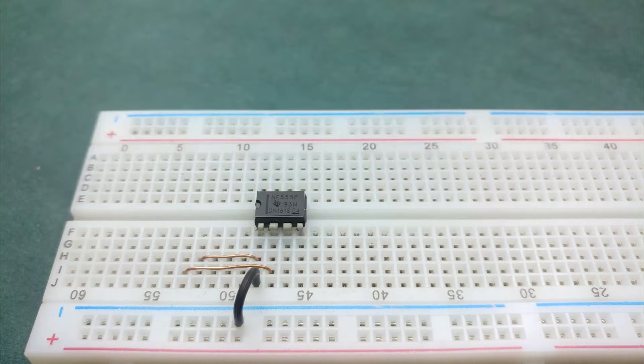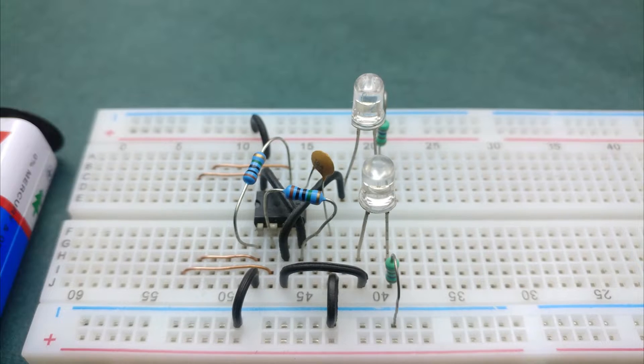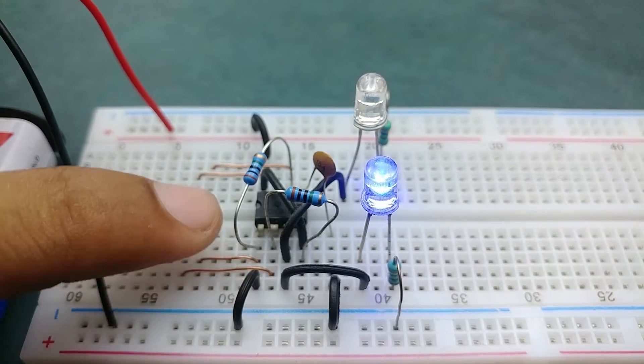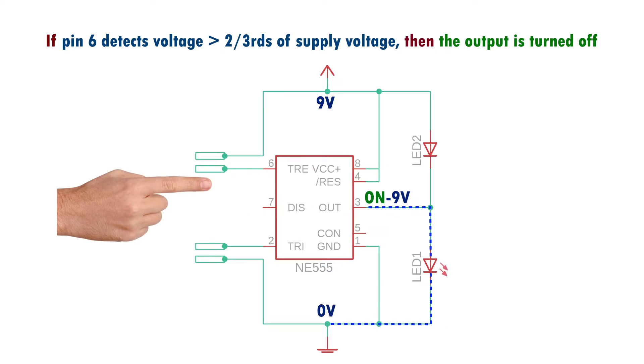Hi, welcome to Elonics. In this episode, we'll see how to make a touch on touch off switch using 555 timer IC. You'll need to touch one pair of contacts to turn on the output and the other pair to turn off the output. We'll also learn how this circuit works.